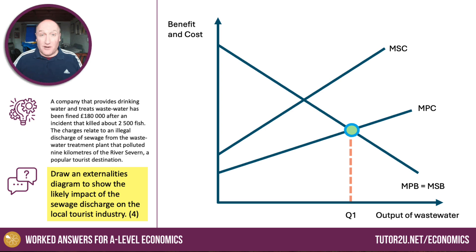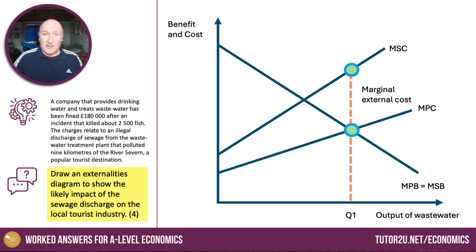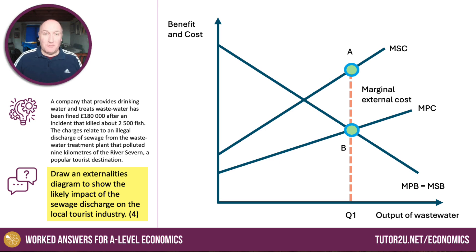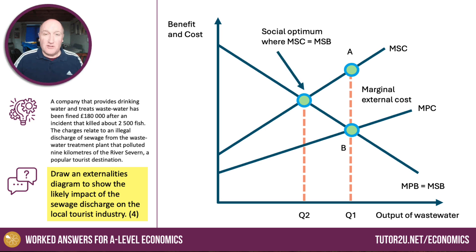Marginal social cost lies above private cost. And at Q1, the marginal external cost is the gap between those two curves, which is the vertical distance AB. So there's our externality from production. And of course, in theory, we wouldn't want to be at Q1. We want less pollution, a reduction in emissions — in illegal pollution. So the social optimum is to the left. Here it is at Q2, where marginal social cost equals marginal social benefit.